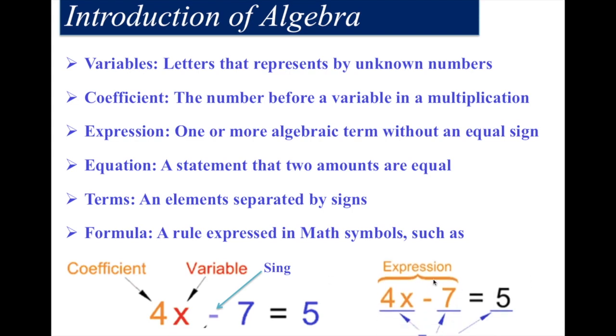And the expression here — 4x minus 7 — is the expression. These are all the terms in the equation.